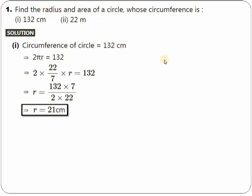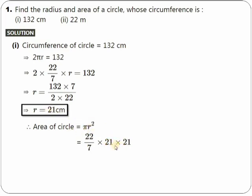Now let's find the area of the circle. The formula for area of the circle is πr². So we have π = 22/7 and r = 21, so r² means 21 × 21. Do the cancellation again and simplify. You will get the answer to be 1386 cm². Remember, area becomes centimeter square. Pause the video and note down.